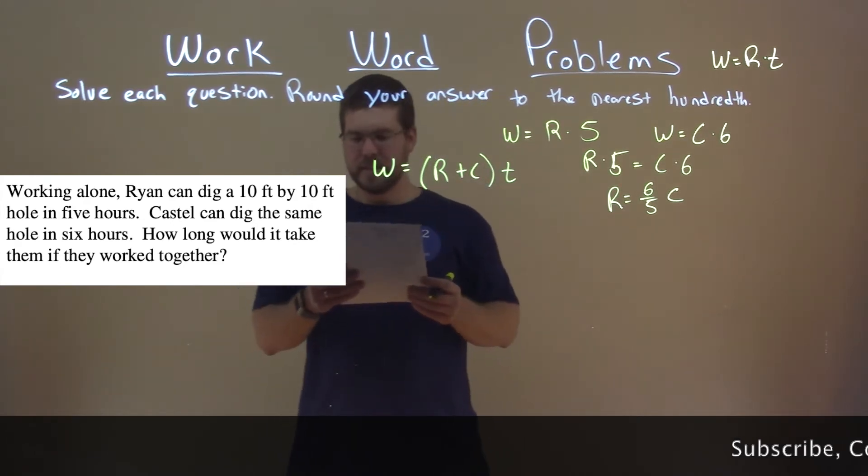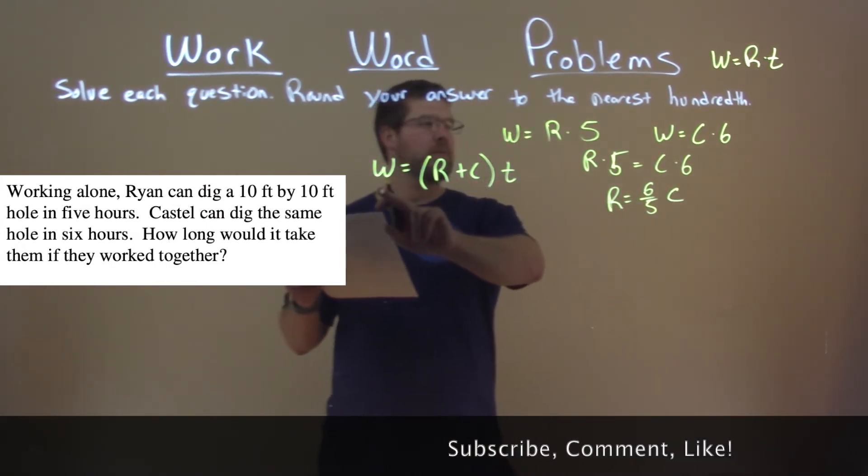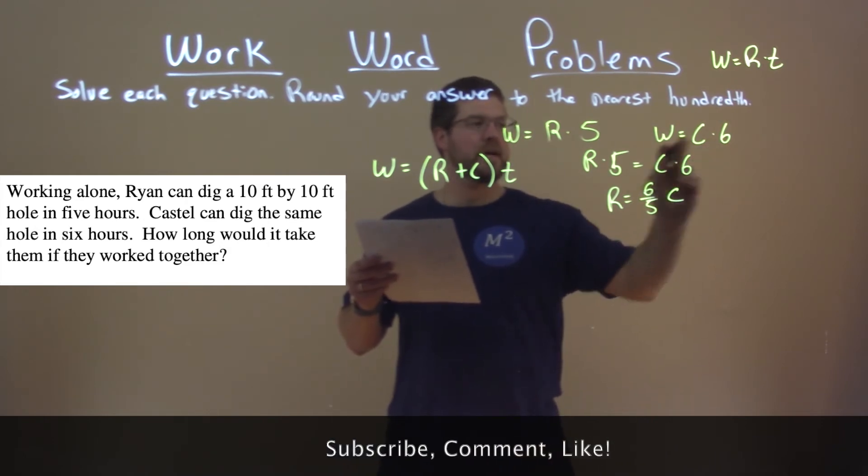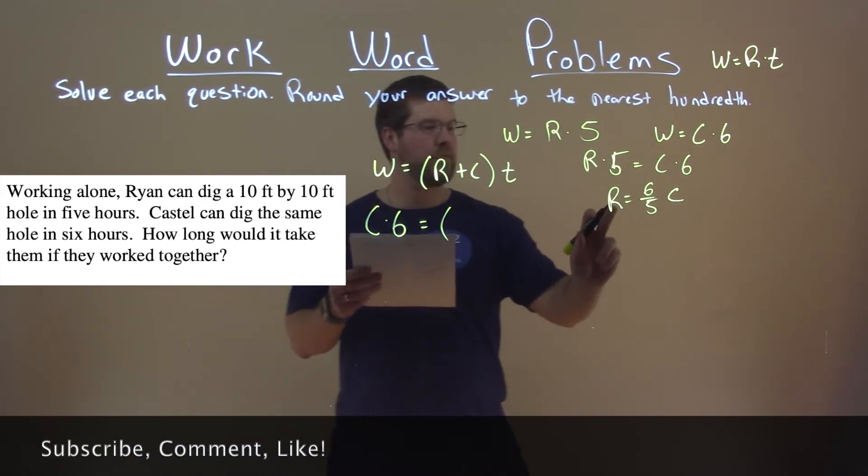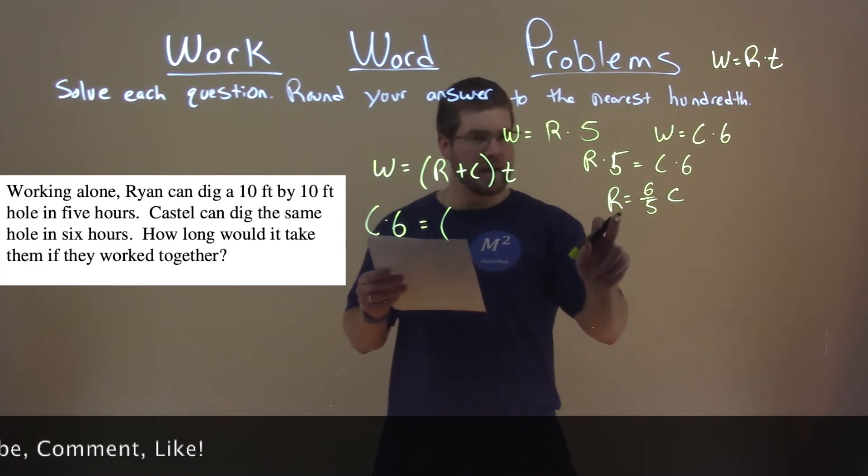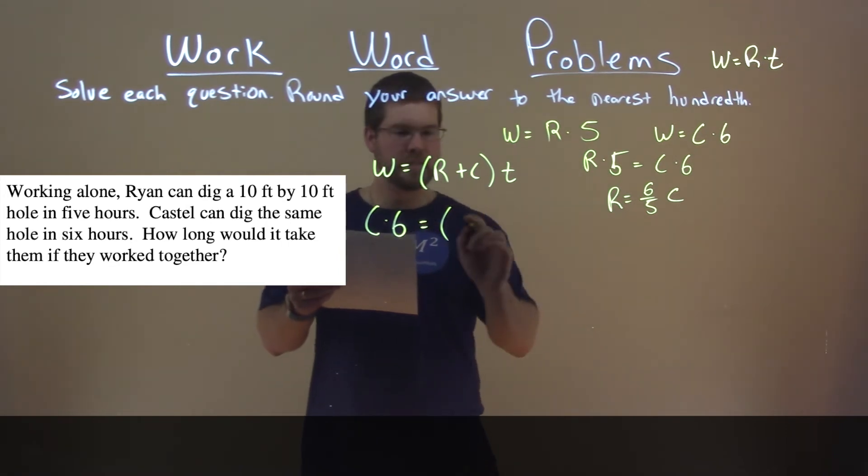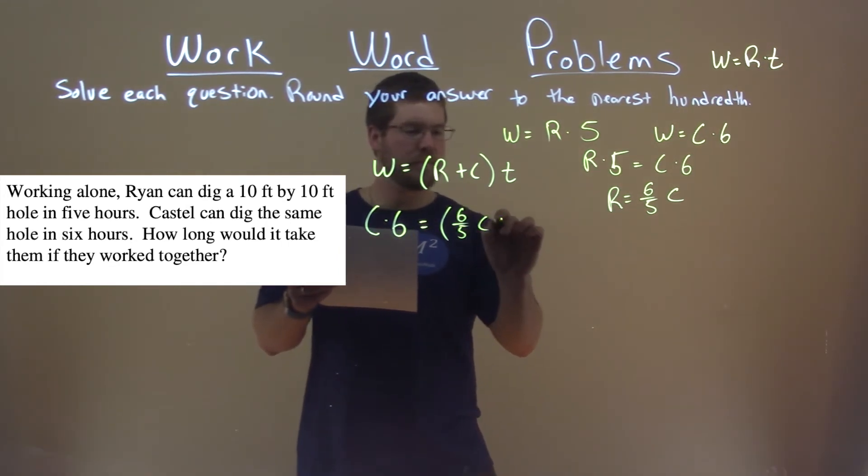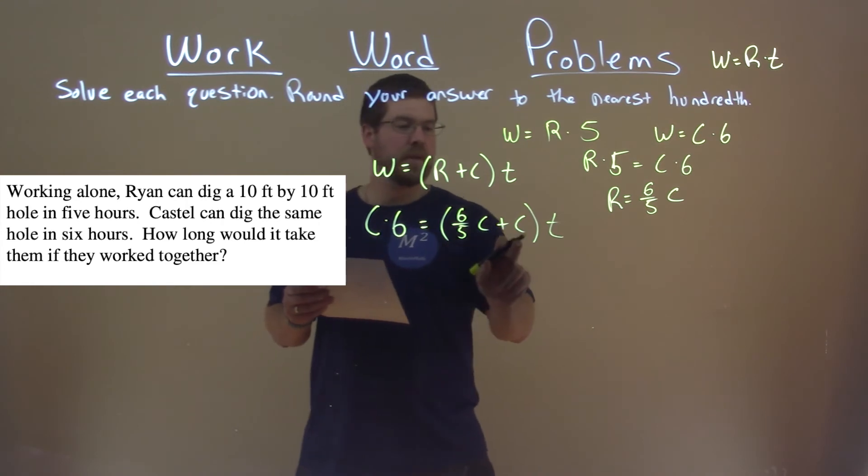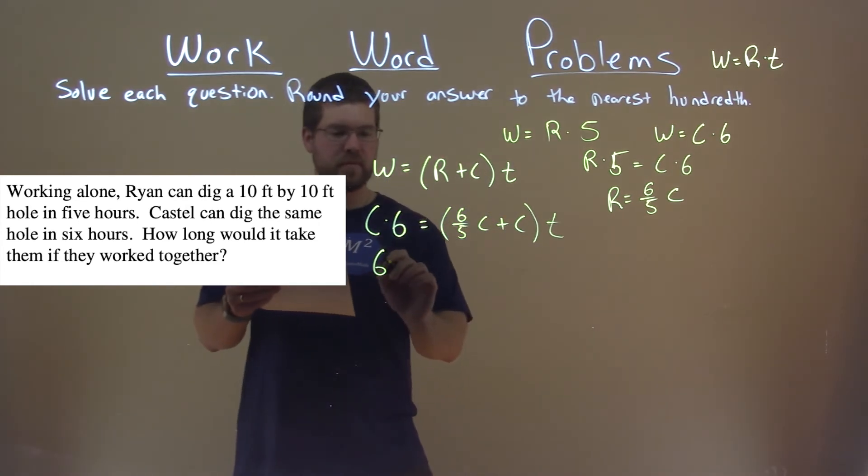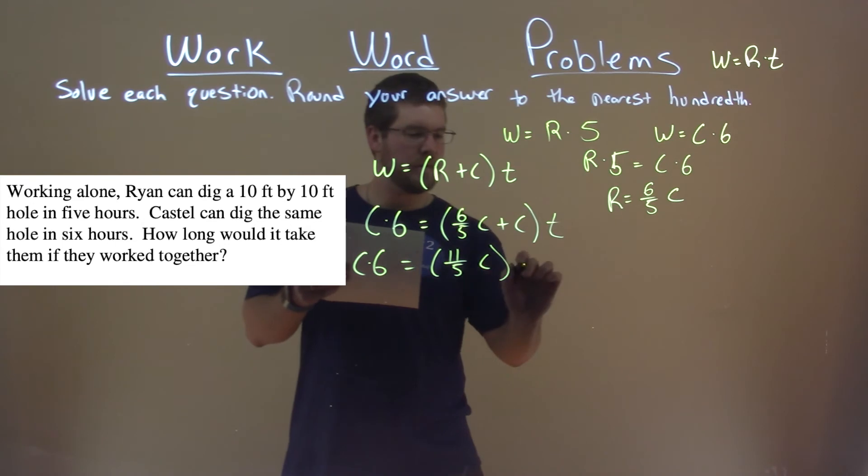So now we want to see how we can simplify this a little bit. We know that W is equal to Castle's work rate times six hours. So we can write that as C times six here. And we have also set it up to ourselves here, that Ryan's work rate is six-fifths of Castle's. So we can replace that R here with six-fifths of Castle's, plus another C comes down, times time. Let's simplify. Six-fifths C plus one C, that's eleven-fifths C. So we have C times six equals eleven-fifths C times time.